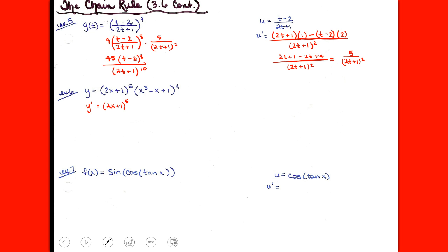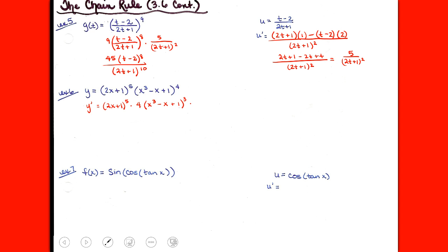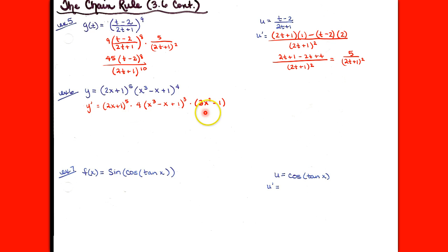Look at example number 6. I went ahead and filled this one in your notes because otherwise it's craziness to write it all down. For example 6, we have a product, so we're going to use the product rule: 1st times derivative of the 2nd. When I go to do the derivative of the 2nd, I have to use chain rule because it's a quantity to the 4th. The derivative of any quantity to the 4th is 4 times that quantity to the 3rd — just bring it along. That's the derivative of the outside function.